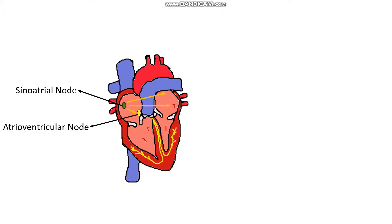Following this, our electrical impulse is passed over into the intraventricular septum, where it makes its way down the bundles of His, also called the bundle branches. We have a right bundle branch and a left bundle branch, and once it makes its way into the apex of the heart, depolarisation occurs from the apex upward.